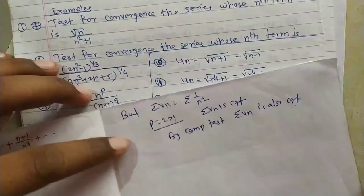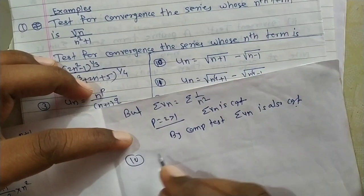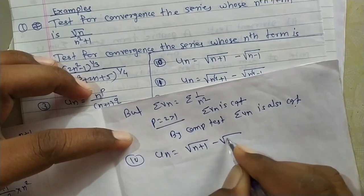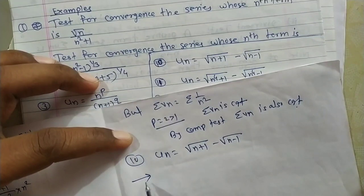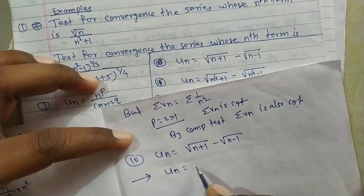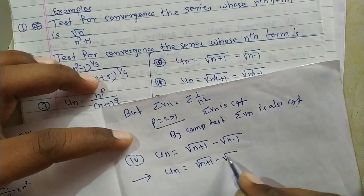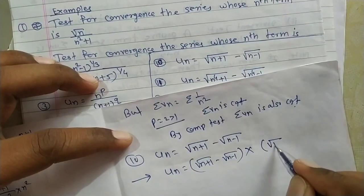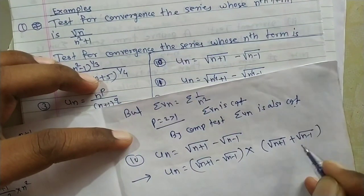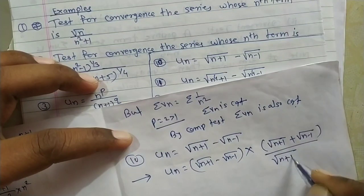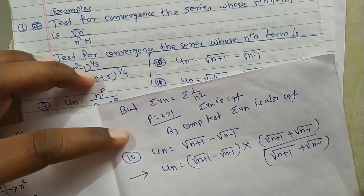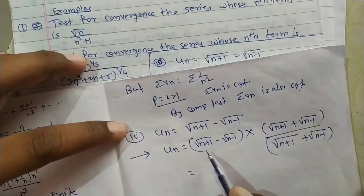Problem 10: un = √(n+1) − √(n−1). The nth term is given. To find vn and apply the comparison test for such problems involving square roots, we first apply rationalization. Multiply and divide by the rationalizing factor √(n+1) + √(n−1).